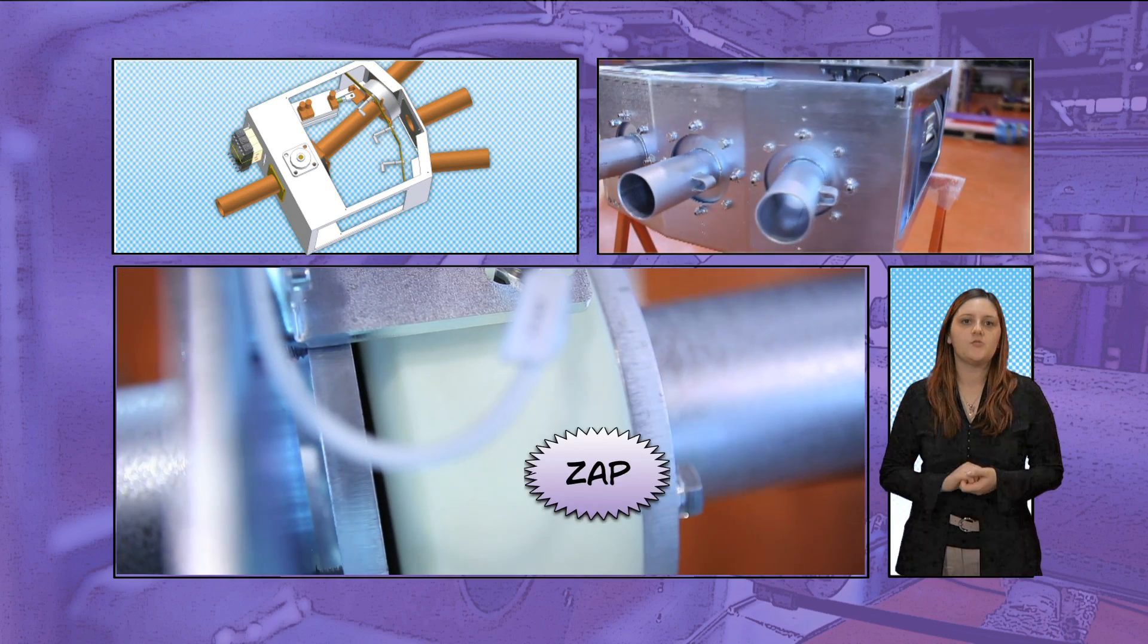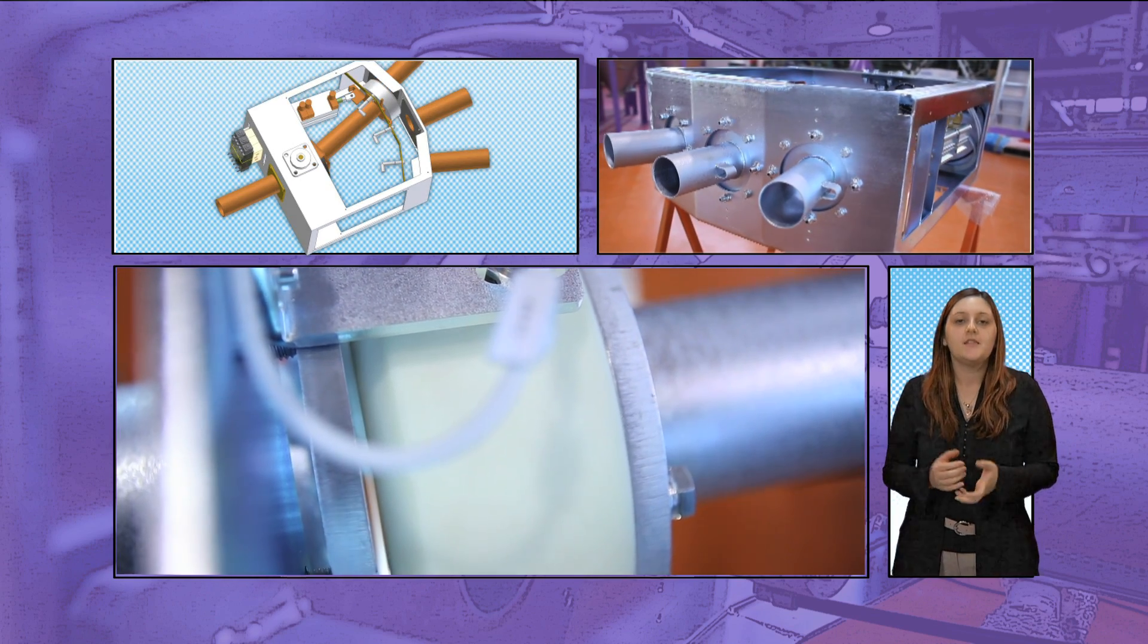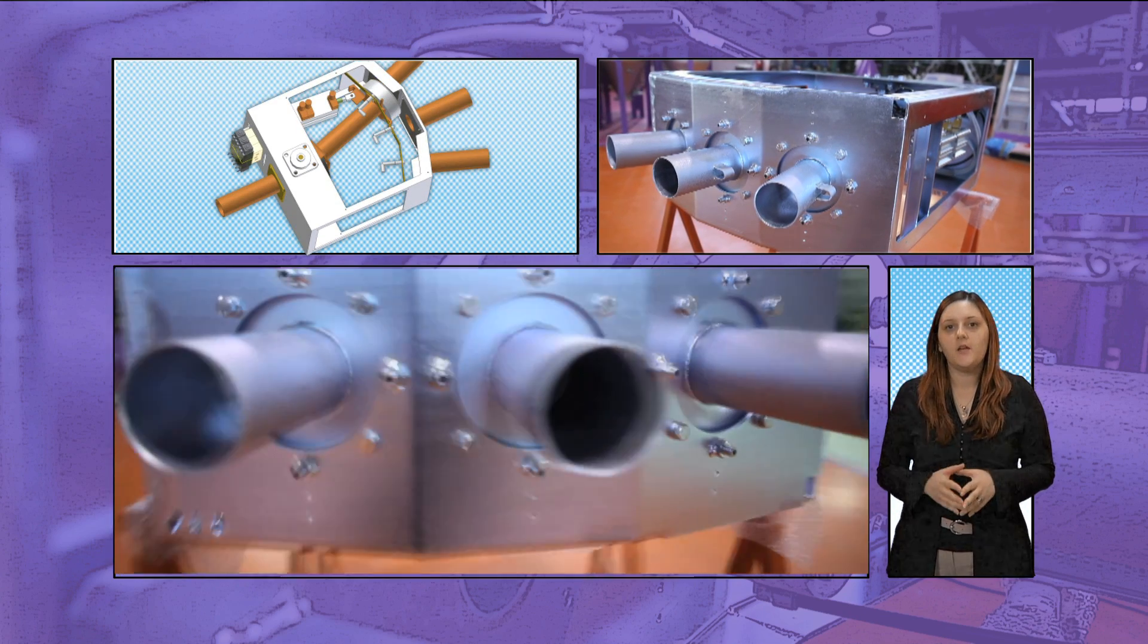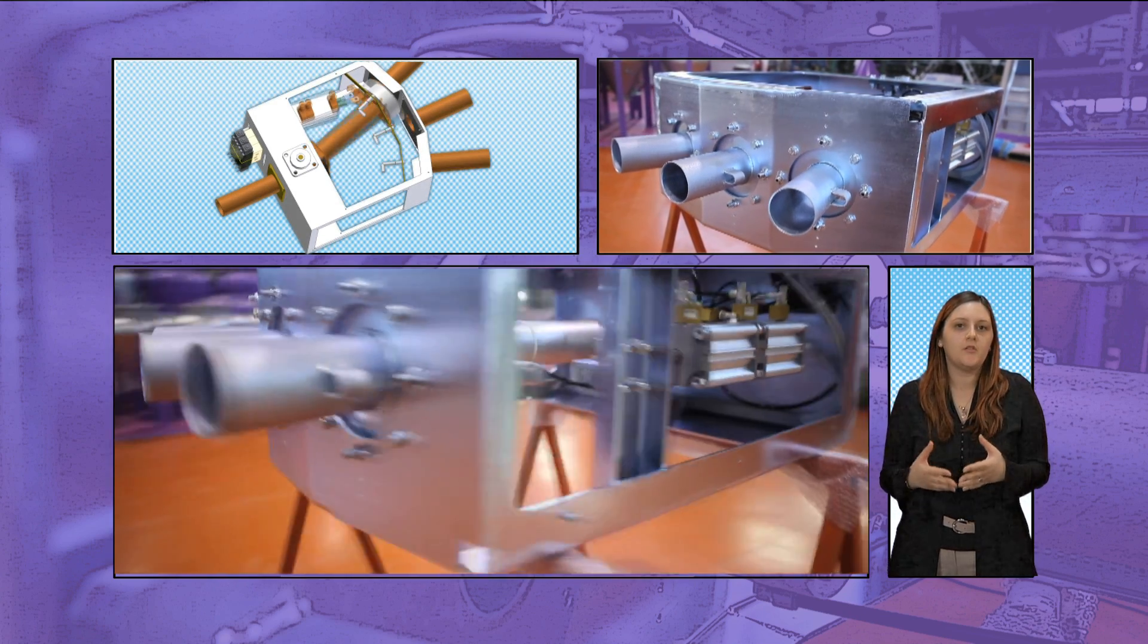The inflatable seal, located on the head of the oscillating tube, contracts to allow for movement into a new position. It expands again once the tube has reached the desired position.